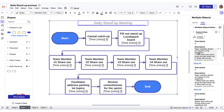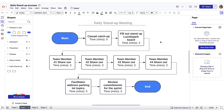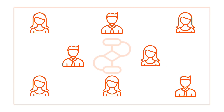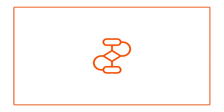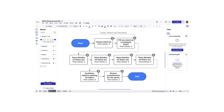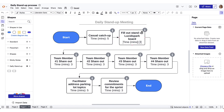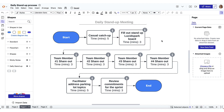Adding custom data to your Lucidchart diagrams can help improve your organization's documentation by embedding the unique knowledge of all your team members into a shared document without creating cluttered mayhem. Having this depth of information organized and all in one place creates a single source of truth that is standardized and easy to use.